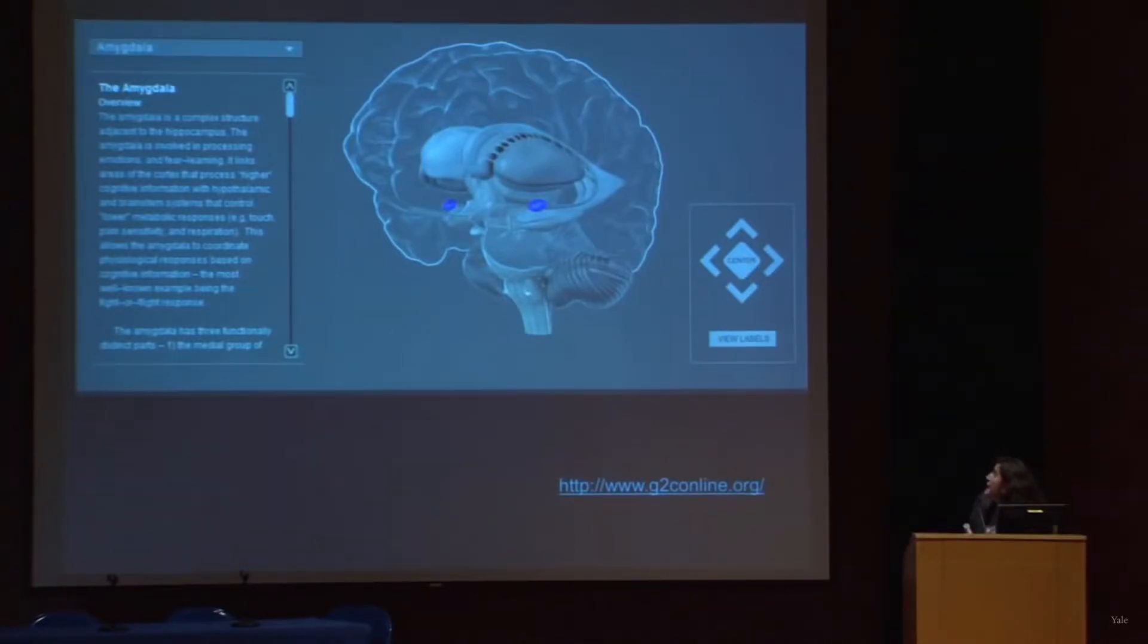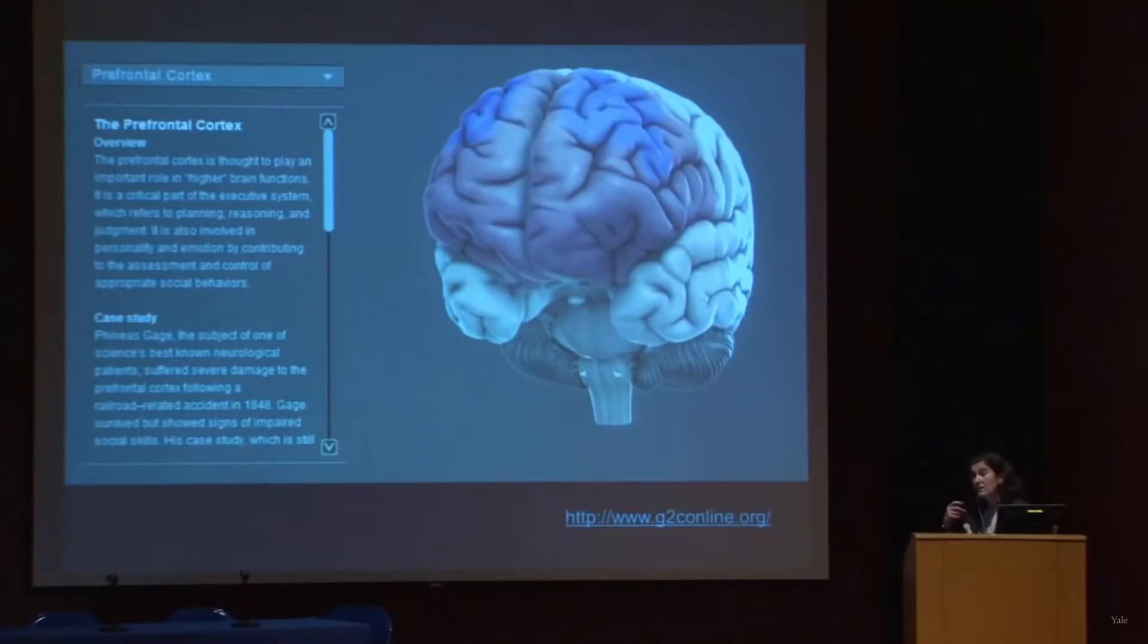This is the amygdala—our emotional center. This tells us what's important to remember, and this triggers a lot of things. This is the prefrontal cortex. This tells me how much I'm gonna act upon these emotions and directs my behavior.